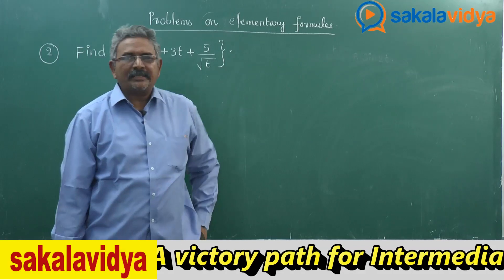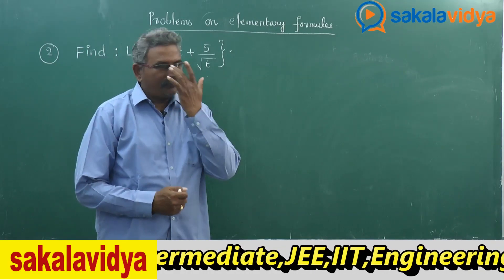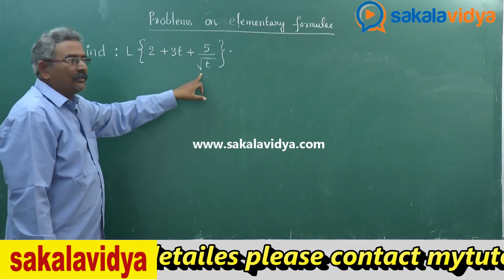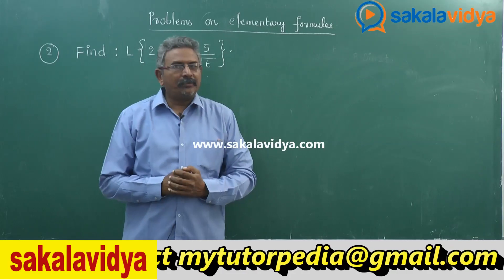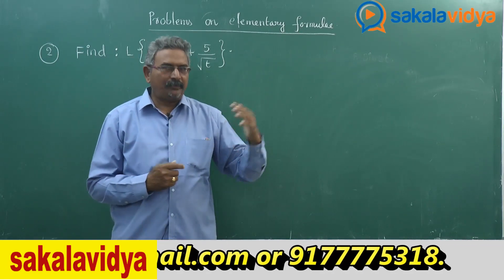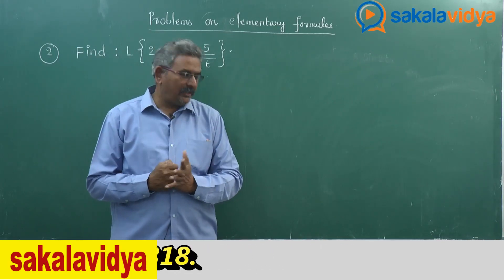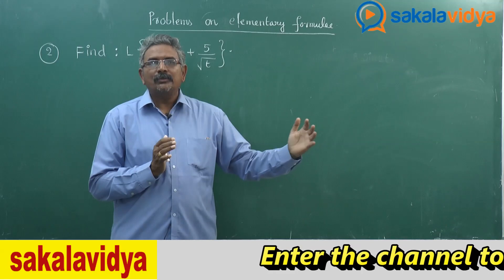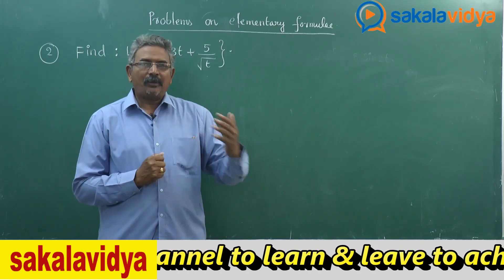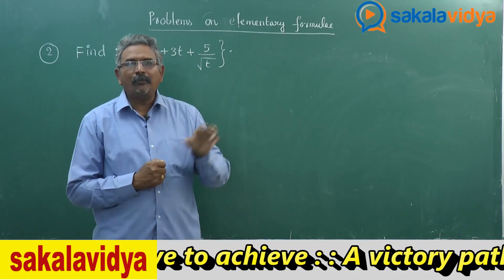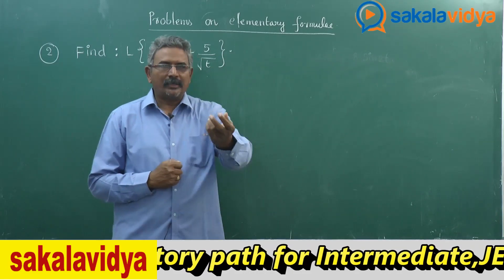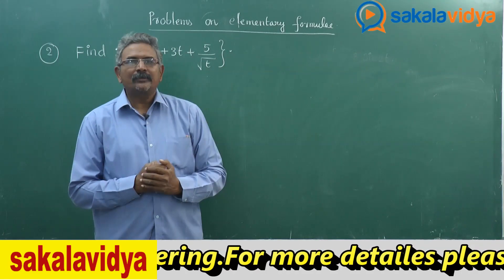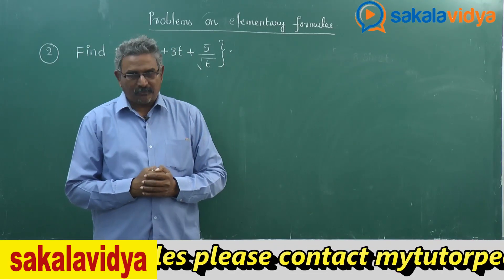Now one more problem — the second problem. Find the Laplace transform of 2 + 3t + 5/√t. Here we need to apply the formula for L{t^n}. Note that 1/√t equals t^(−1/2). The general formula is L{t^n} = Γ(n+1) / s^(n+1) whenever n is not a positive integer. Using this, the Laplace transform of t^(−1/2) becomes √π / s. With these formulae, we can solve this problem.